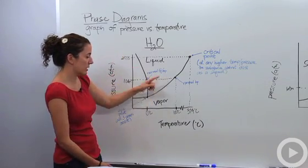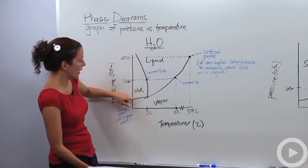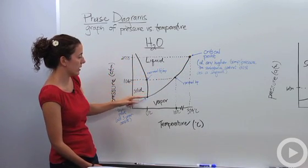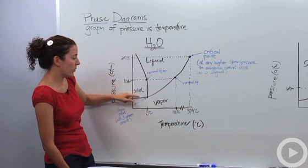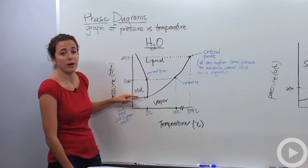So we have three major lines here. We have one going up this way and we have one coming down here. This separation here between the solid and vapor, this point where at any time it crosses this line, we're going to have sublimation occurring.